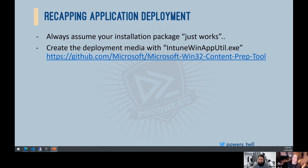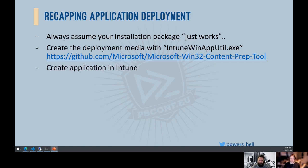Next: create the deployment media with the IntuneWin App Util CLI tool — available on the linked GitHub repo. It encrypts your installation media and puts it in a file you can upload to Intune. It's maintained and constantly updated, so always use the latest version. Check the READMEs because the repo occasionally changes.